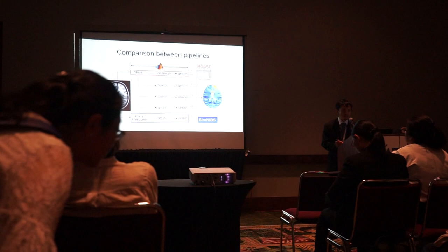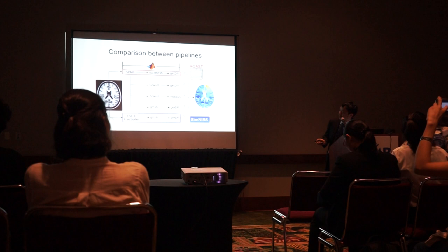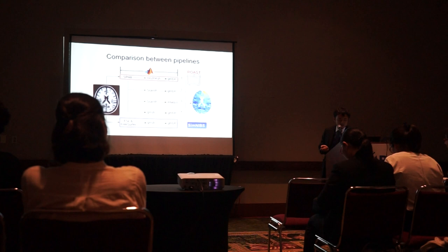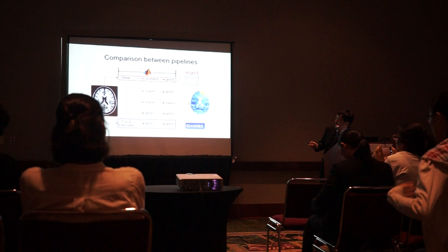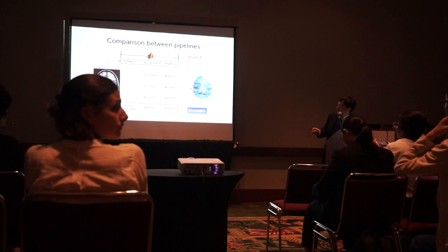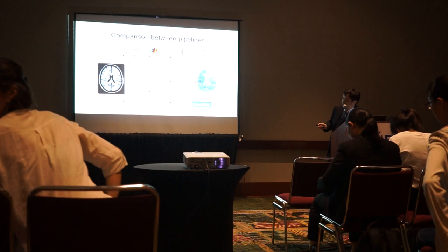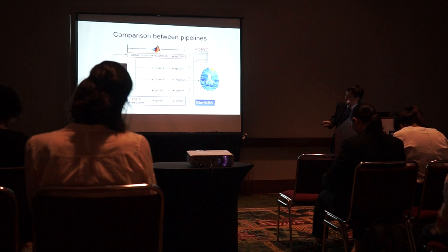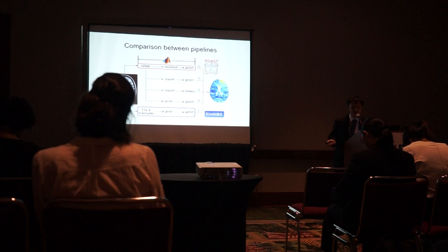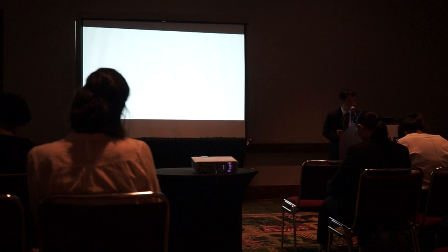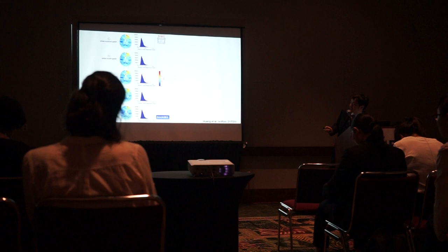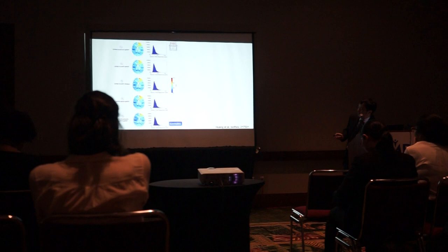I'm going to show some initial results evaluating the ROAST pipeline against other modeling pipelines including the commercial software SimNIBS. Basically, the first pipeline is ROAST, and then I replace the mesher and solver with different alternatives including commercial software SimNIBS and commercial software Abacus. I also tested with the mesher GeoMesh and replaced SPM with FSL and FreeSurfer. We're going to see how all these different pipelines differ in predicting the electric field distribution, and it turns out they are pretty much similar.